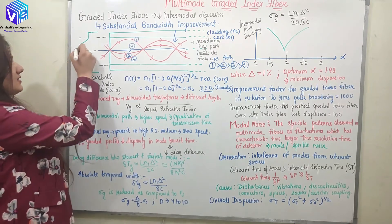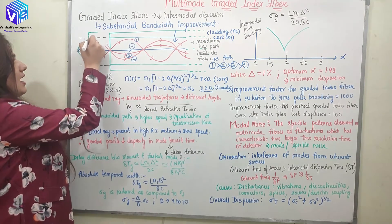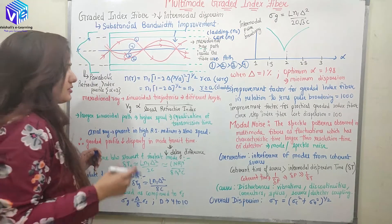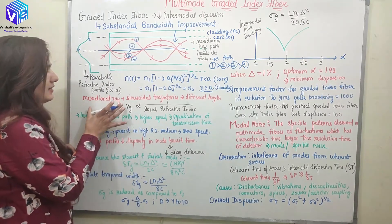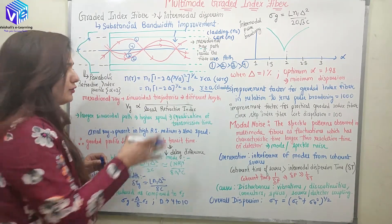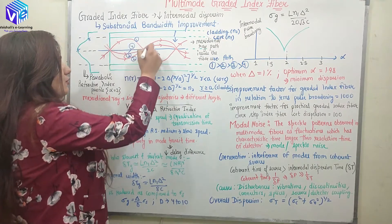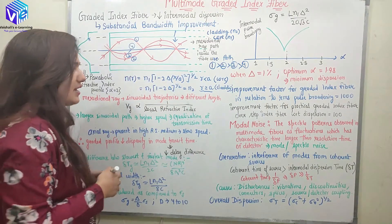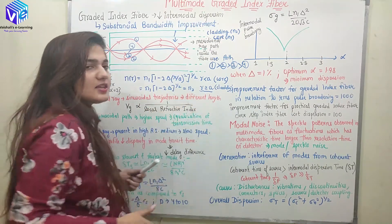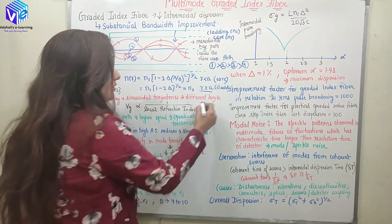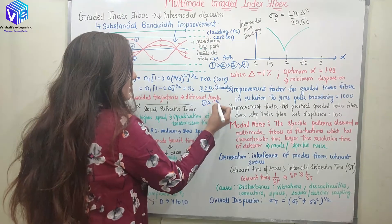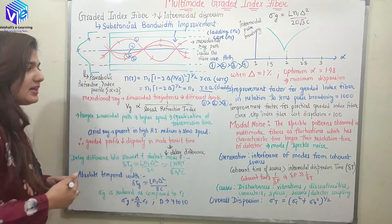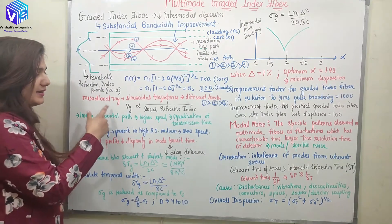From this equation I can construct the parabolic profile graph. Here I have the maximum refractive index at the center and the minimum refractive index at the edge. The meridional rays follow sinusoidal trajectories. Rays 1, 2, and 3 follow sinusoidal trajectories of different lengths — ray 1 has the greatest length, then 2, then 3. This is how I classify the trajectory lengths of the meridional rays.